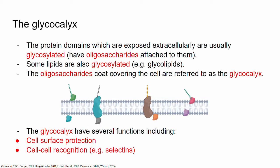As I stated before in a previous video, the protein domains which are exposed extracellularly are usually glycosylated. The different types of proteins, whether we're talking about integral proteins or peripheral proteins, which have regions exposed to the outside of the cell or facing the extracellular matrix, are usually glycosylated. So they have carbs attached to them, more specifically oligosaccharides.